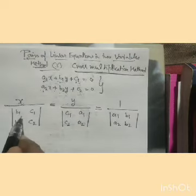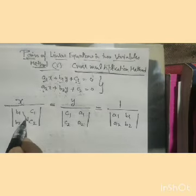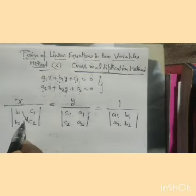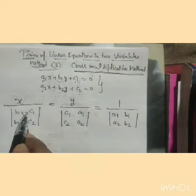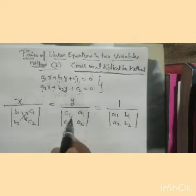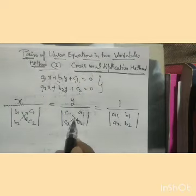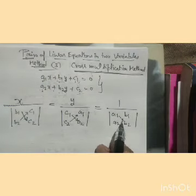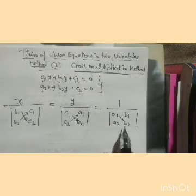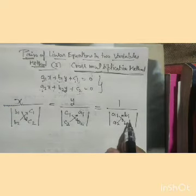We put arrows there. One arrow pointing downward — that multiplication takes a positive sign. One arrow pointing upward — that multiplication takes a negative sign. Pointing downward is positive, pointing upward is negative.